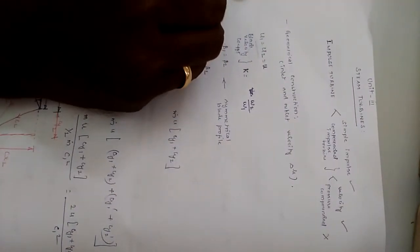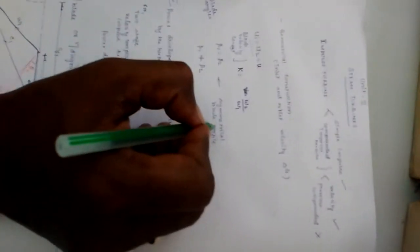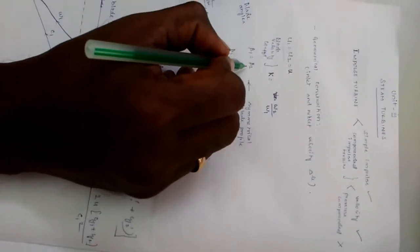And beta 1, beta 2 are the blade angles at inlet and outlet. In the problem, if they specify the blade is symmetrical blade profile, that indicates the blade angles at the inlet and outlet are same.